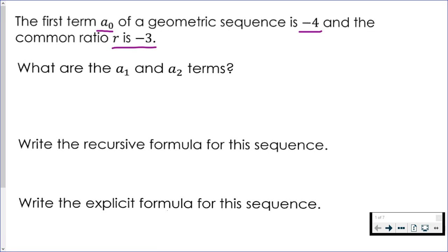First part of the question is asking us for term one and term two. We're already given term zero, so in order to go from term zero to term one, we multiply by our common ratio, which is negative three. So I'm going to take negative four and multiply by the common ratio to get term one to equal 12.